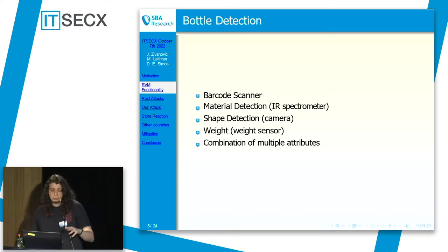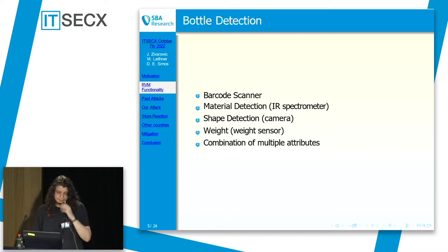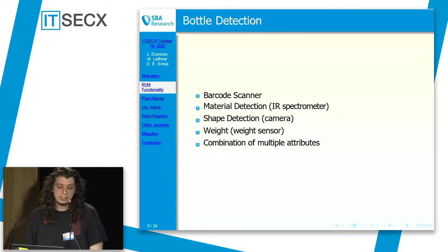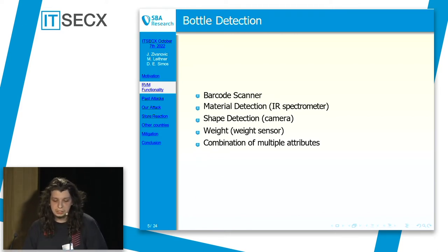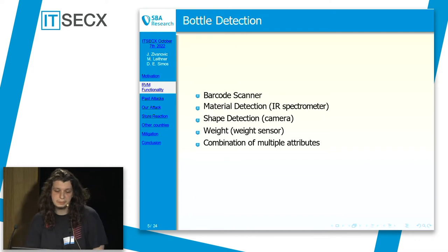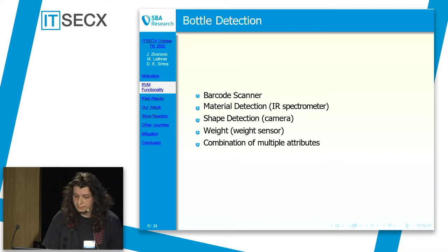However, it can also be more complex, like material detection using a spectrometer, or even shape detection using a camera over the conveyor belt, comparing the shape of the bottle to trained bottle shapes. Another important detection sensor is weight, which is usually used to prevent people from simply taking bottles from the store and putting them directly into the machine without paying first. Some machines also use a combination of multiple attributes.